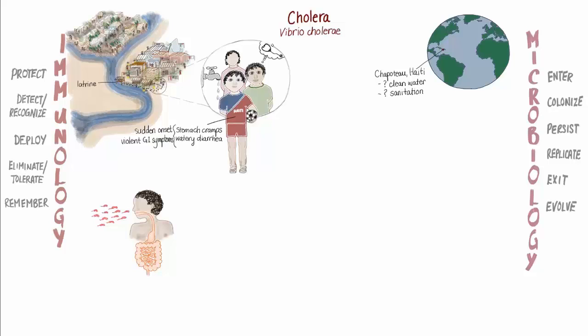Jan thought back to his first year of medical school and remembered learning about the father of epidemiology, a physician by the name of John Snow, who had noticed a similar clustering of cholera in a London neighborhood and had linked the disease back to a contaminated water supply. Remembering his younger brother's choice of water supply that morning, Jan began mentally mapping the families who had been reported ill — they all collected water from that communal source.